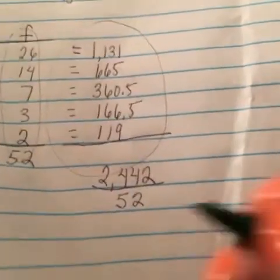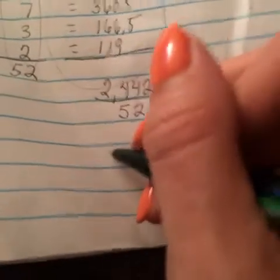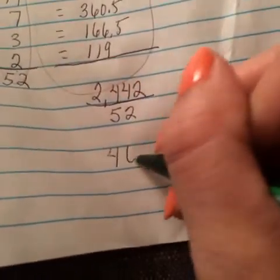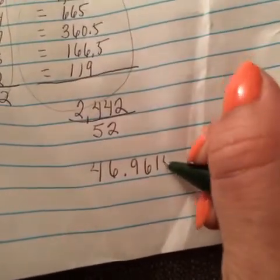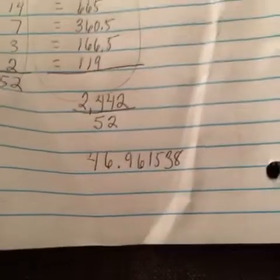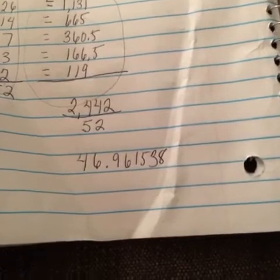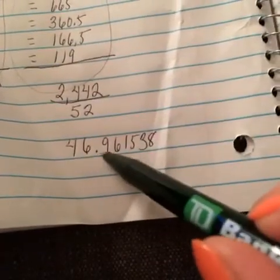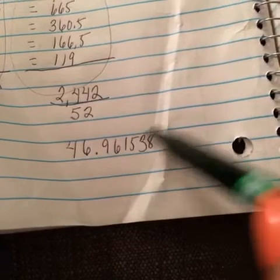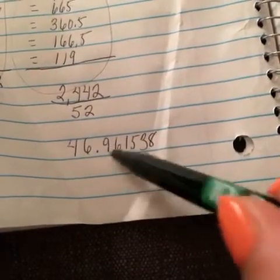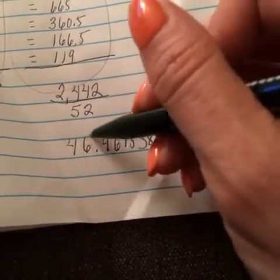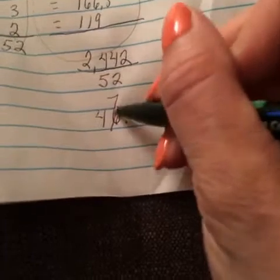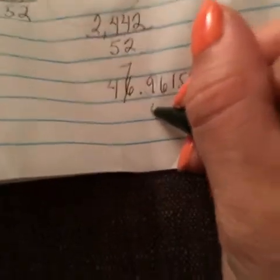You go ahead and divide that up and what you will get would be a long crazy number which will be 46.961538. So what we want to do is round this number off. We'll round to the nearest tenth. 46.9, nine is five or higher, so we'll take this six and make it a seven. So our answer to this problem will be 47.